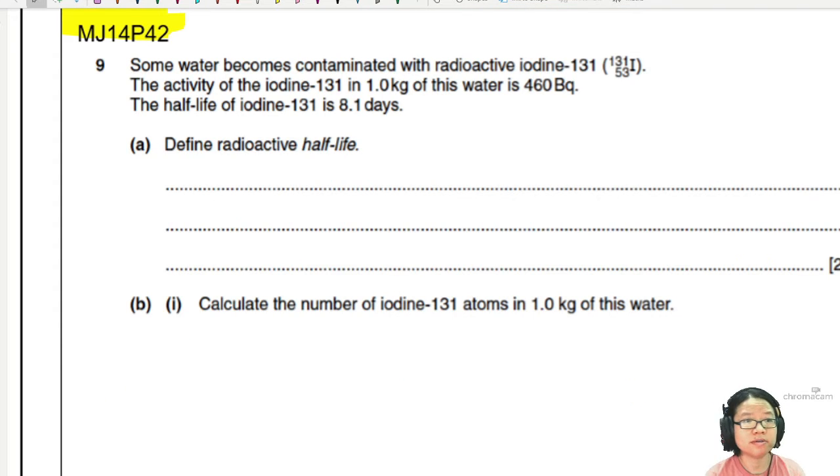Some water becomes contaminated with radioactive iodine-131. The activity of iodine-131 in 1 kilogram of this water is 460 becquerel. You're given the half-life, it's 8.1 days. Part (a) asks: define radioactive half-life.